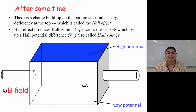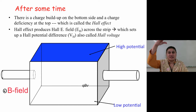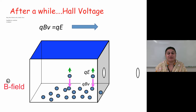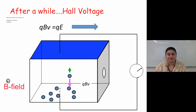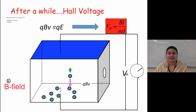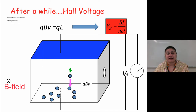We get a high potential area and a low potential area. Negative charges go down, positive charges accumulate at the top, and automatically there is a potential difference between these two spots. After a while, the Hall voltage condition becomes QVB equals QE. A Hall voltage VH is set up between the top and the bottom of the conductor. That Hall voltage is BI over NEL, where L is the length of the conductor, E is the charge, N is the number of electrons, B is the external magnetic field applied, and I is the current.